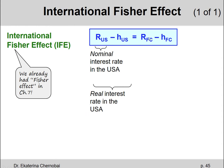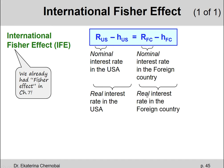Same for the foreign country. The capital R subscript FC — that's the nominal risk-free rate in the foreign country. And when we subtract the foreign inflation rate from it, we get the real risk-free interest rate in the foreign country.